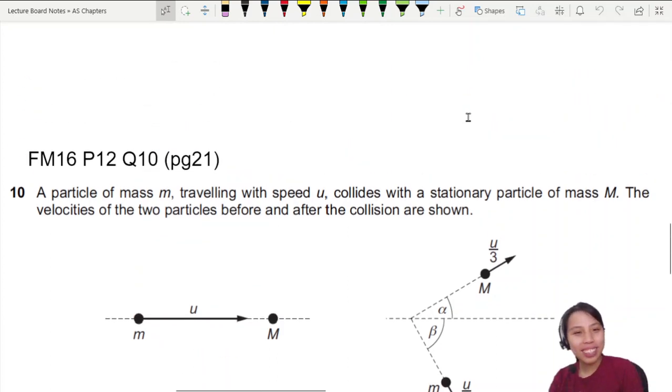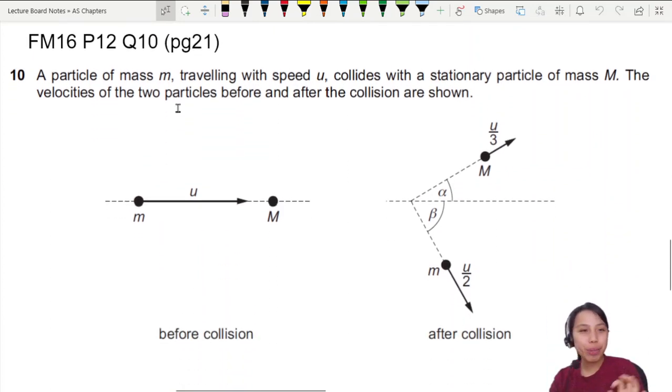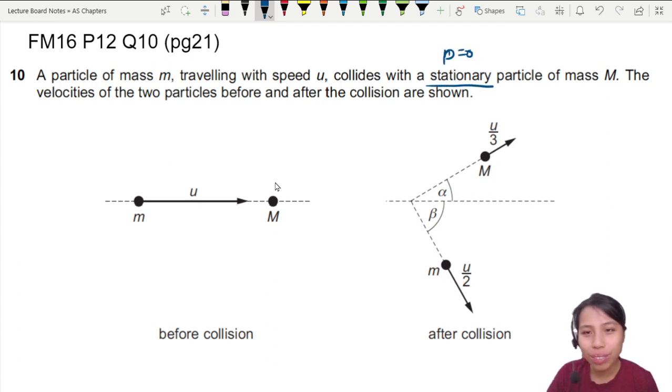A fun example that really tests our understanding of vector diagrams. What you have here is a particle traveling with speed u colliding with a stationary particle. Now this is great because if you are stationary, your momentum is zero. So initial momentum really is due to m u, and that's pretty much it.